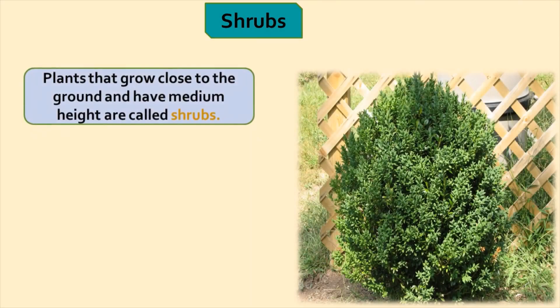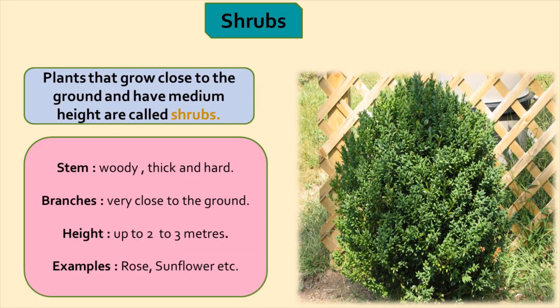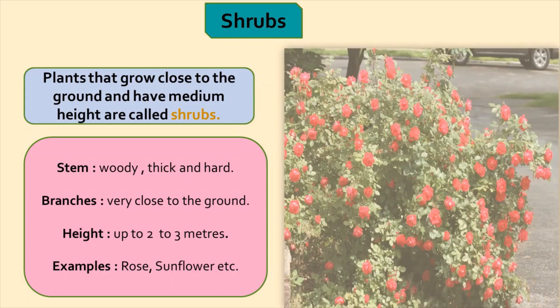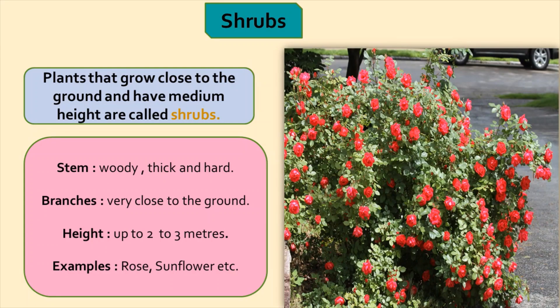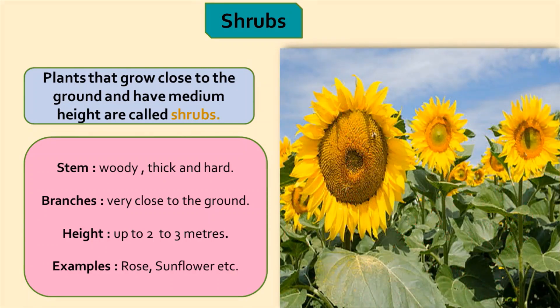Shrubs: plants that grow close to the ground and have medium height are called shrubs. Shrubs have a woody, thick, and hard stem. They give out branches very close to the ground. Shrubs grow up to 2 to 3 meters. They are shorter and smaller than trees. For example, rose plant, sunflower plant, etc.